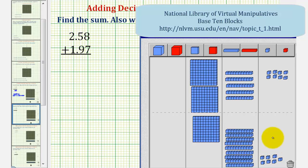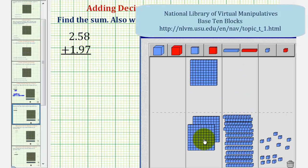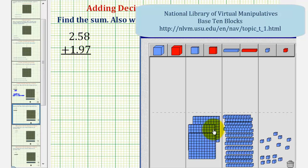Because we're adding, we want to combine all the base ten blocks to find the sum. Let's go ahead and move all the blocks down to the bottom. And now let's find the sum. Let's first take a look at the hundredths.